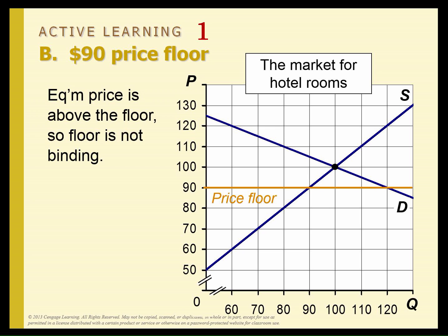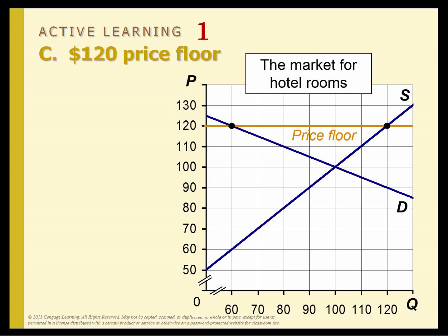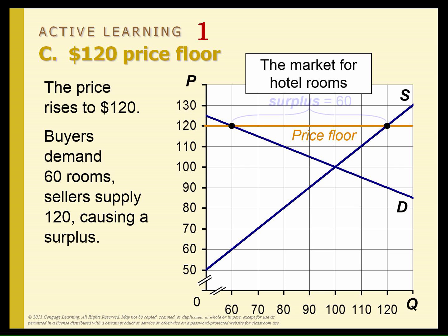Let's do a $90 price floor. A price floor means the price cannot go below it — that is the illegal region, and below is the okay region. The price is in the okay region, so this is not binding. But if there's a price floor that is too high, the equilibrium price is in the illegal region. The hotel makers want to sell 120 rooms, but because they're so expensive, only 60 people can afford to buy them. So there are all these extra hotel rooms left over — a surplus.